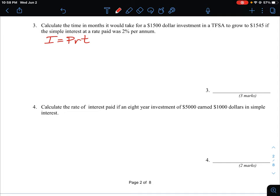So it says here the time in months, so we're going to solve for T. We have a $1,500 investment, so that means the principal invested is $1,500. And we're going to grow it to $1,545. So that's actually the total value of the investment, the principal plus the interest.